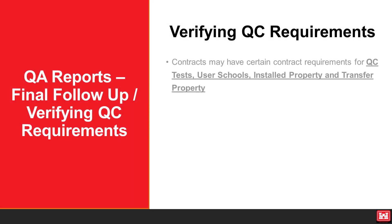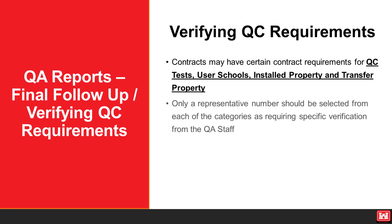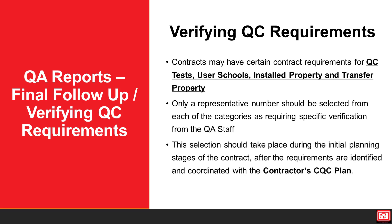In RMS, each contract may have contract requirements for QC tests, user schools, installed property, and transfer property. Many of these actions are critical enough to be specifically verified by the government. It would not be reasonable that the government QA staff be required to verify 100% of these actions. Therefore, only a representative number should be selected from each of the categories as requiring specific verification from the QA staff. The number of QC requirements that the QA staff will verify should be determined during the initial planning stages once the requirements are identified and coordinated with the contractor CQC plan. For more information on QC requirements, please see the link in the description box below.